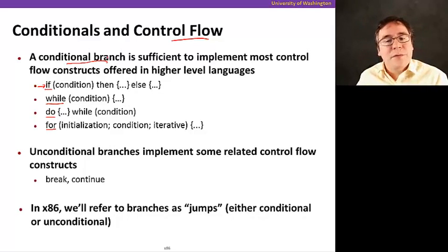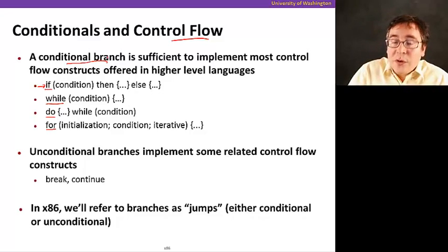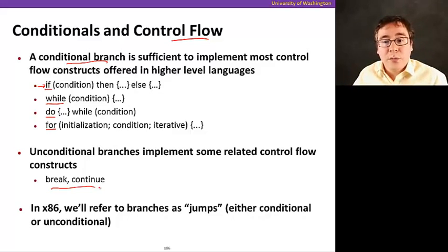Unconditional branches, which are branches that just execute no matter what, regardless of the condition, are used to implement things like break and continue. Break just breaks out of a loop and continue goes back to the beginning of the loop. Those are unconditional—they happen anyway. So we use unconditional branches for those.